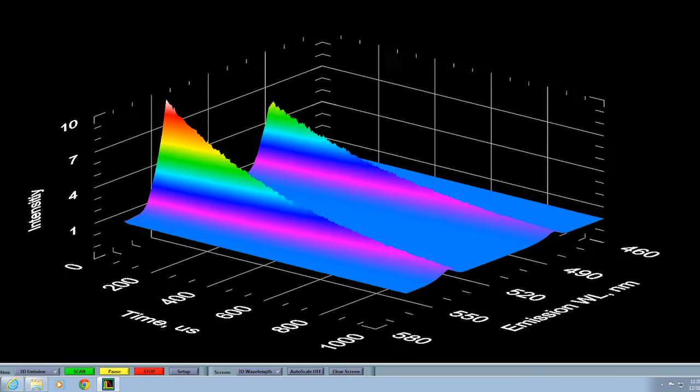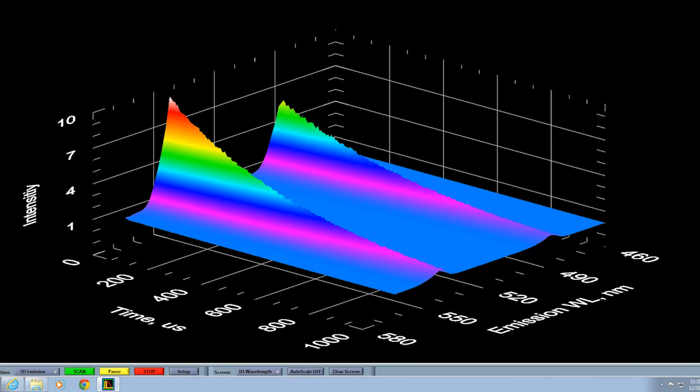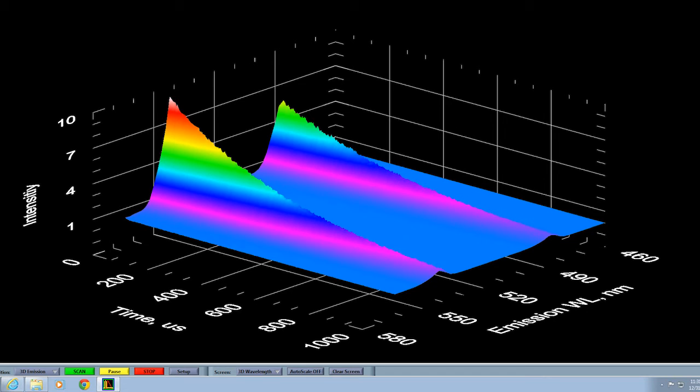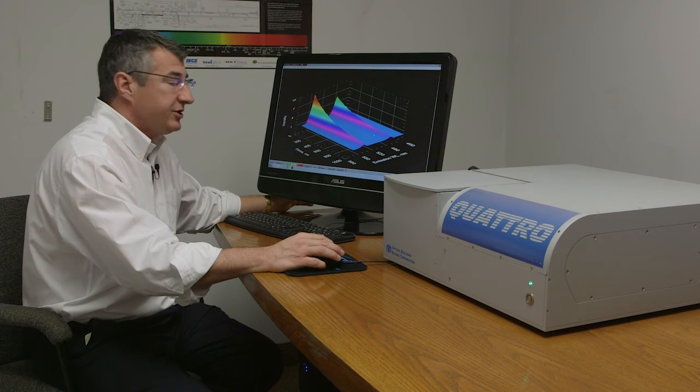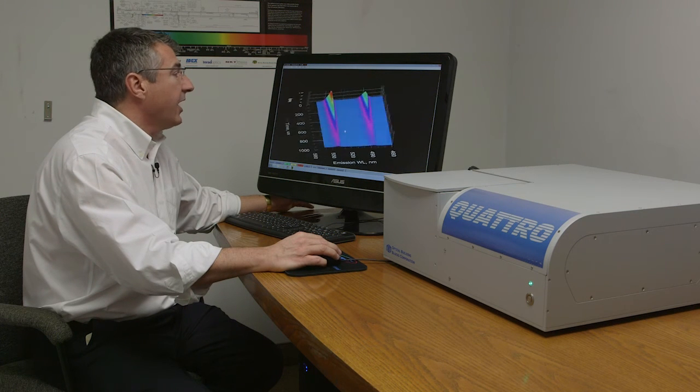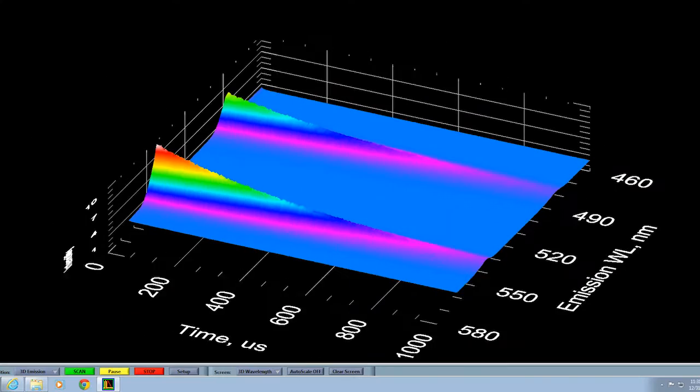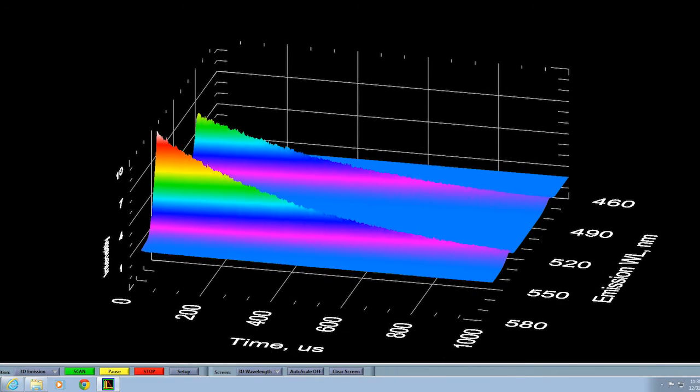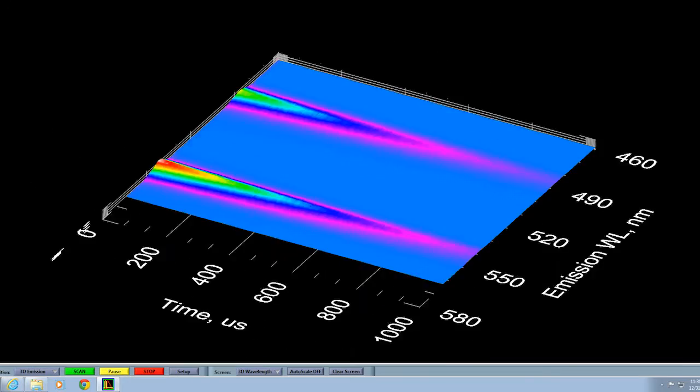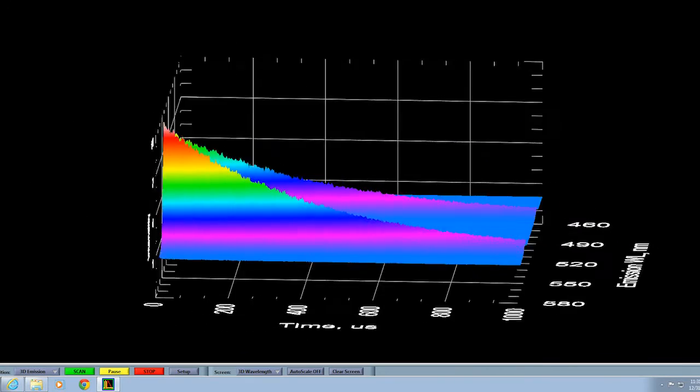Here you can see we've actually collected a number of decay curves at a variety of different emission wavelengths. We've done it only in the matter of a few seconds and we've collected really a lot of quite useful information. We're now looking at decay as a function of emission wavelength and again it can be displayed in a variety of different ways.